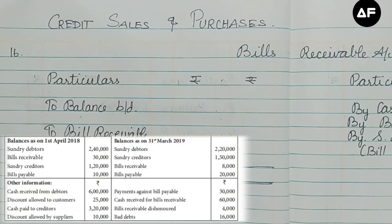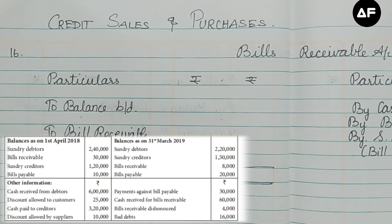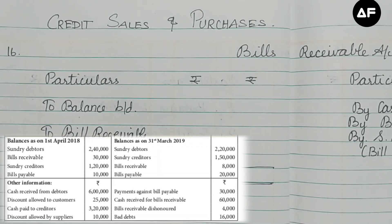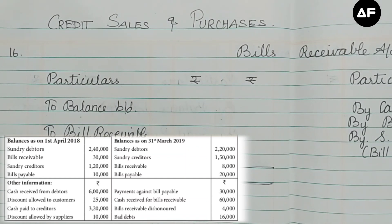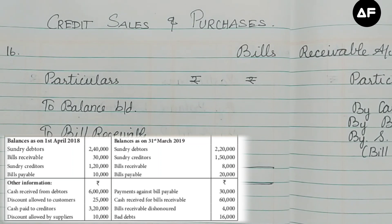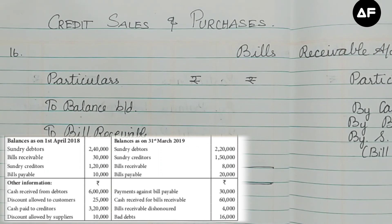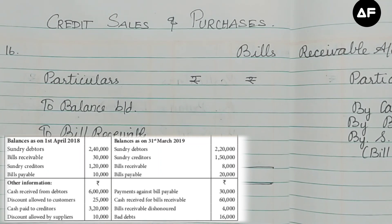Let's start with the bills receivable account. The items going into this account are obviously the opening balance and closing balance of bills receivable. Apart from that, we have cash received for bills receivable of 60,000 and bills receivable dishonored. From these, we have to find the bills receivable figure to be transferred into the total debtors account, and the dishonor will also be transferred into the total debtors account.